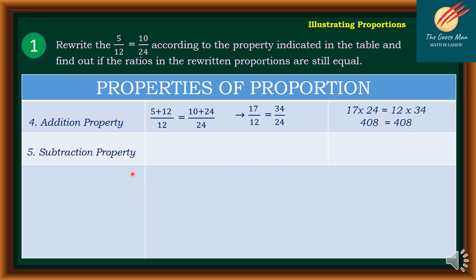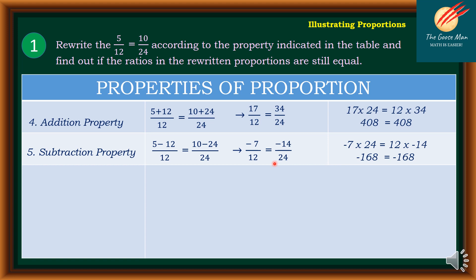The next property is the subtraction property. If I have 5 minus 12 all over 12, is it equal to 10 minus 24 all over 24? I get negative 7 over 12 is equal to negative 14 over 24. Using the cross-product to verify: negative 7 times 24 is equal to 12 times negative 14. Clearly, negative 168 is equal to negative 168, so therefore it is a proportion.